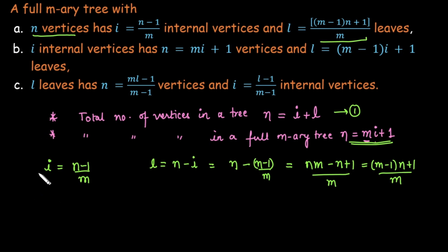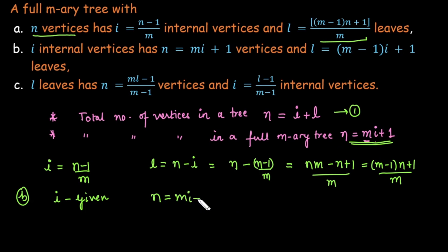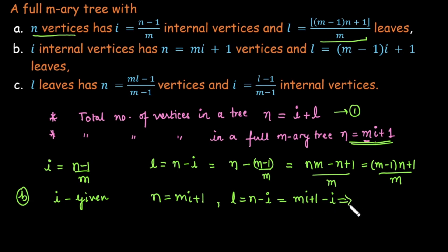For case 2, if the number of internal vertices i is given, the number of vertices is n = m × i + 1, which we have already derived. The leaves are equal to total vertices minus internal vertices: (m × i + 1) − i, which gives leaves = (m − 1) × i + 1.